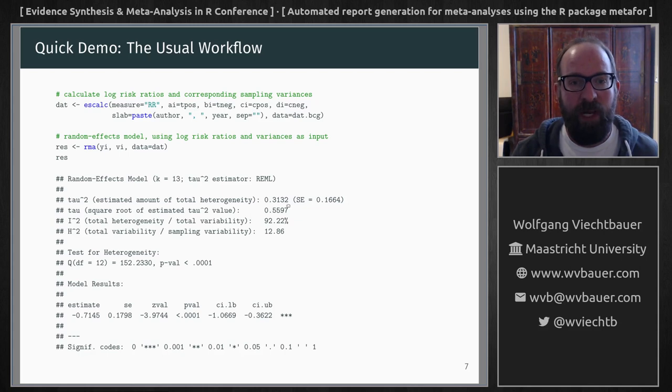So we see here our estimate of tau squared, so the amount of heterogeneity, I squared, we get the Q test for heterogeneity, we get the estimated average log risk ratio and the corresponding confidence interval.